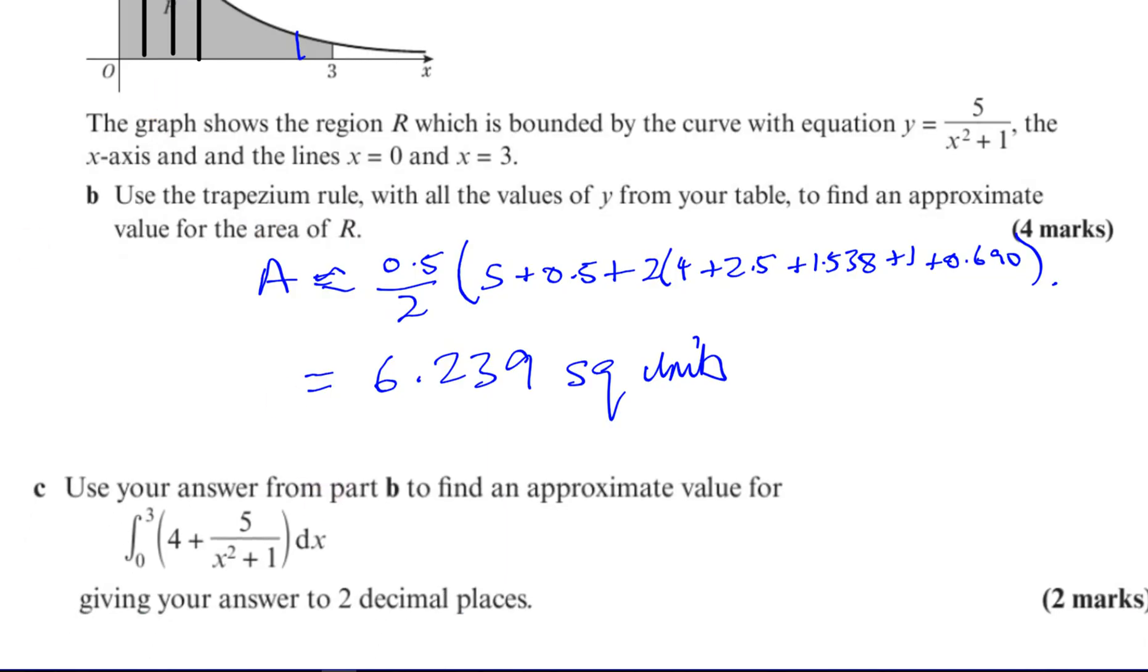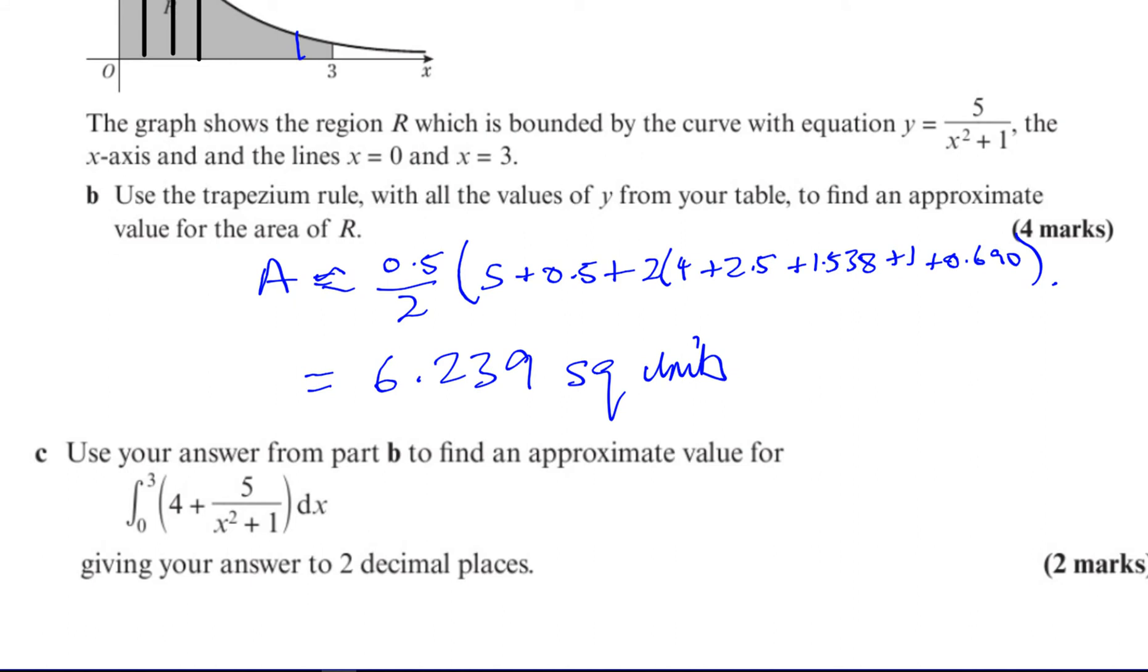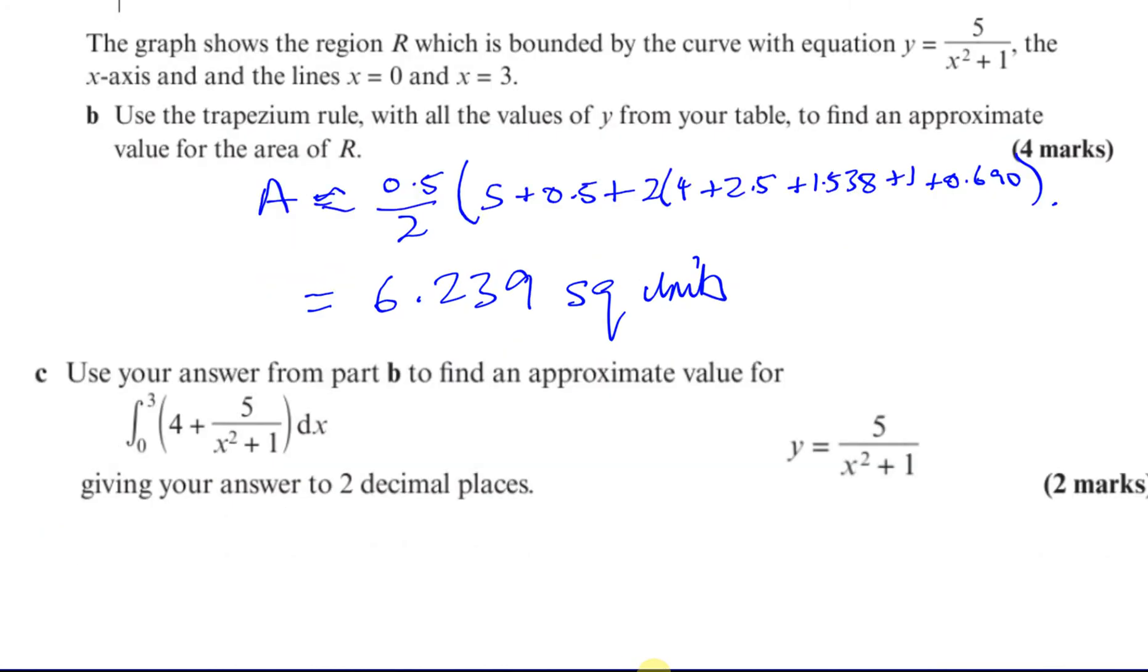Okay, then it says use your answer from part B to find an approximate value for the integral of this. Okay, so now I've got the equation that we found the area under between those values. Okay, so, by the way, this answer, I mean, I guess they didn't mention three decimal places or three anything, so if they didn't mention anything, it's best really to write it to 3, 6.24 square units, to 3SF. If something's not mentioned, it's best to write it to 3SF. They only mention three significant three decimal places for the values in the table. Okay, so first, I guess, is to write this as 6.24. It didn't state anything, so it's not a big problem.